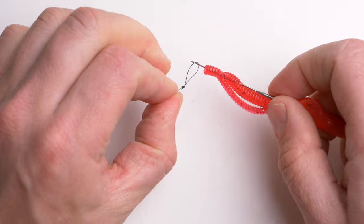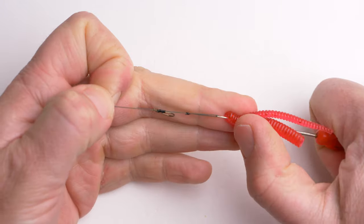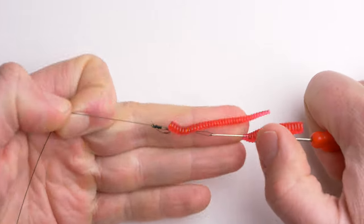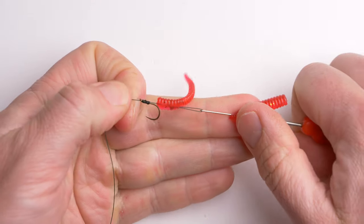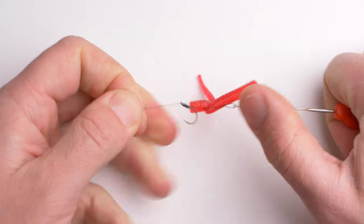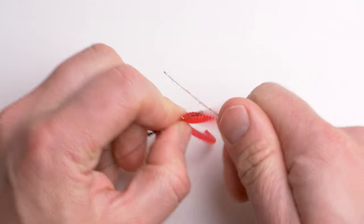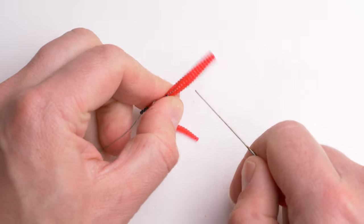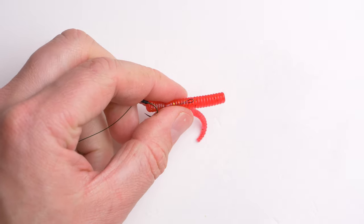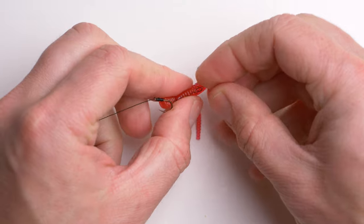Then slide those worms onto the hair just like that, one by one, gently. And then just use a bait stop to fix them onto the hair rig.